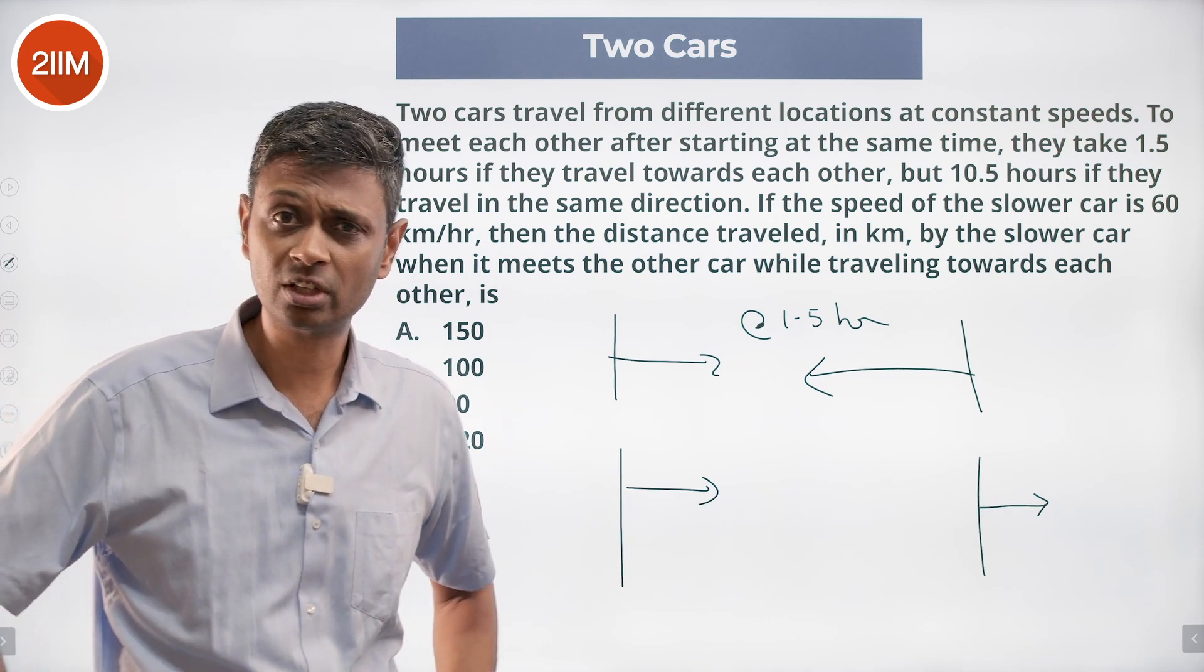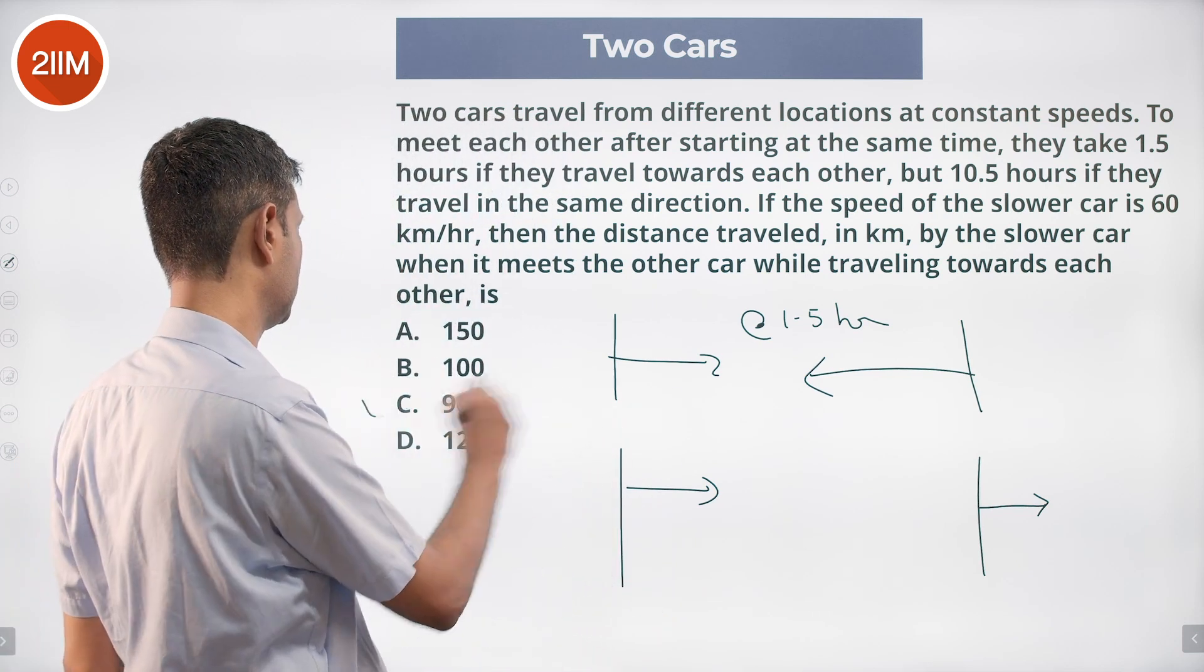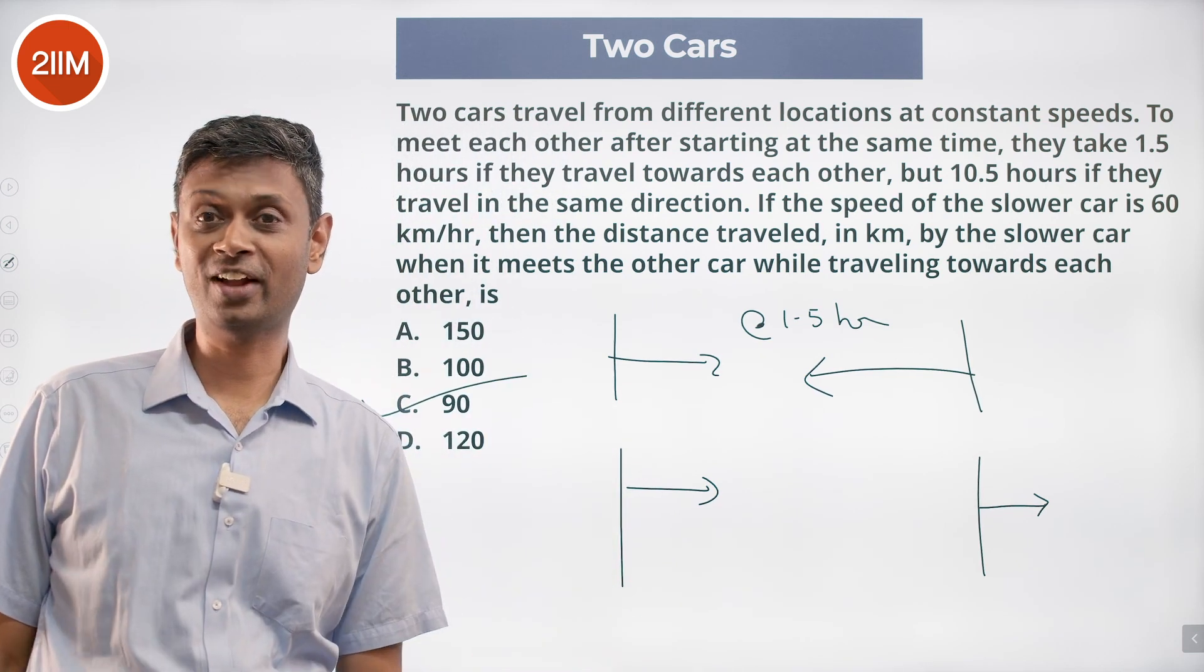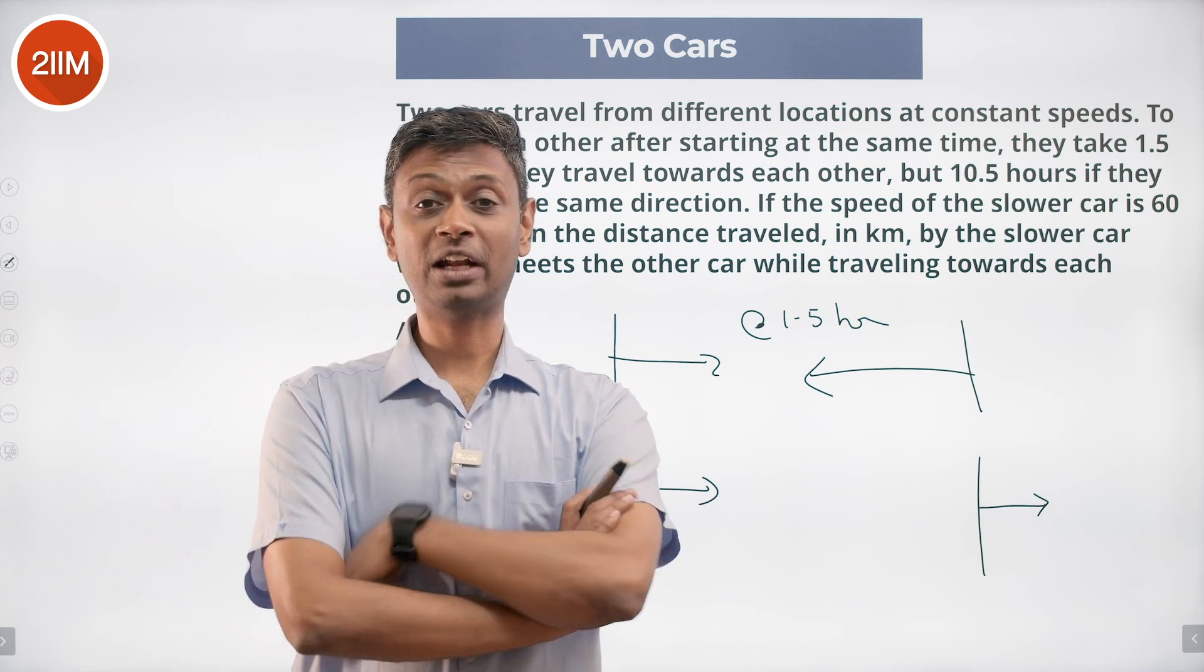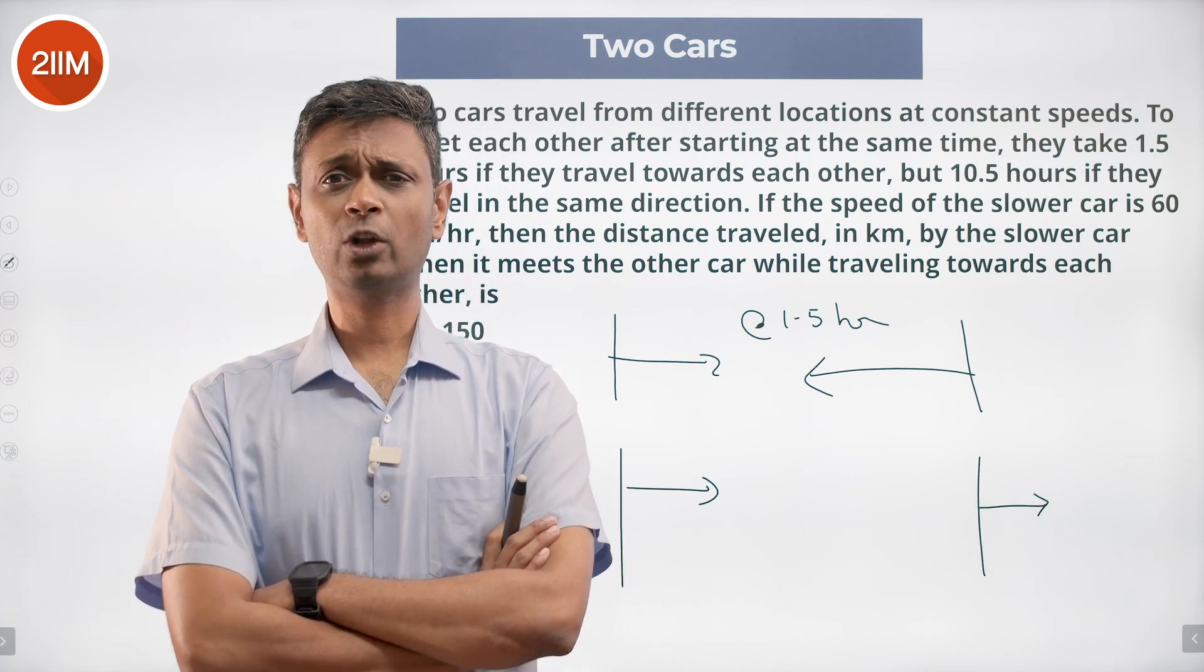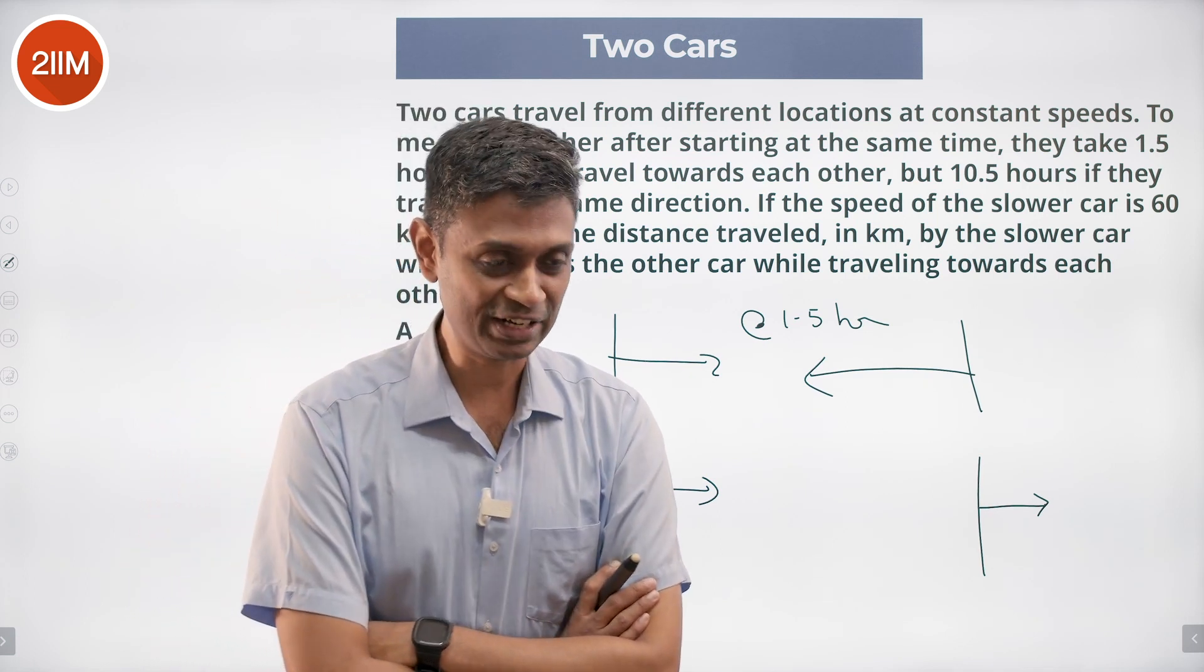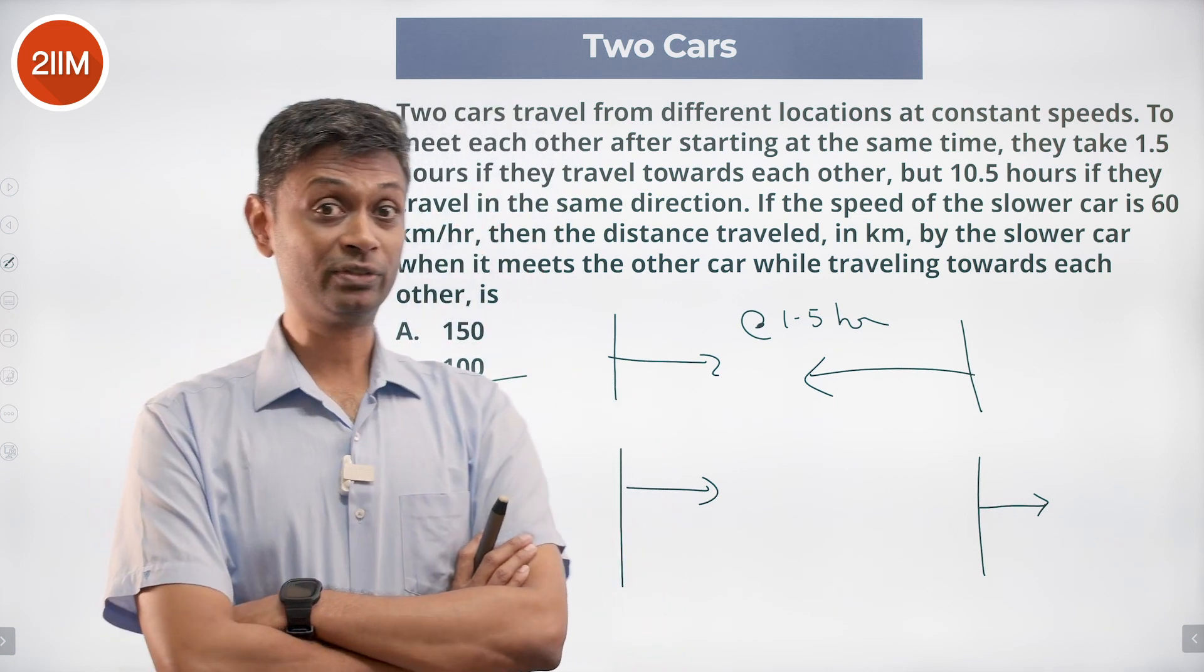While traveling towards each other, takes 1.5 hours, traveling at 60 kilometers per hour. Nothing - we don't need to solve anything! The speed is given, time traveled is given. The slower car is traveling at 60 kilometers per hour, it travels 1.5 hours before it meets. How much distance will it travel? 60 kilometers per hour times 1.5 - 90 kilometers. I spent an inordinate amount of time on...